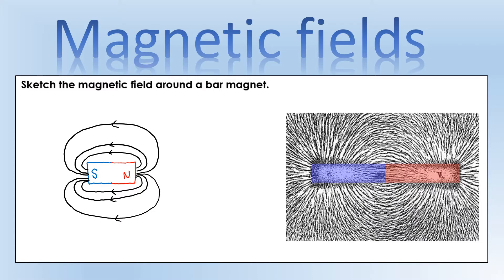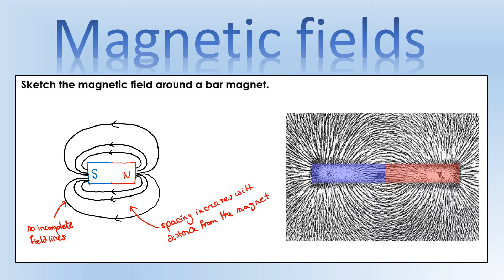So this would be a diagrammatic representation of the picture you can see over there, and there are a few key things you need to make sure you're showing on a diagram. There should be no incomplete field lines — if a field line leaves the north pole it must reach a south pole. Second, the further away from the magnet you get, the spacing between lines would increase, showing the field is getting weaker.